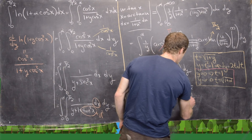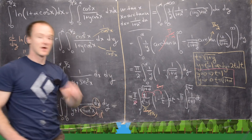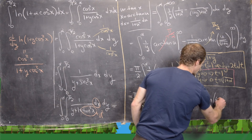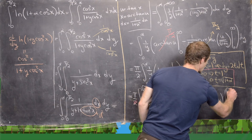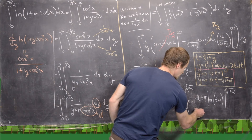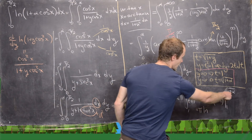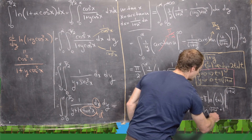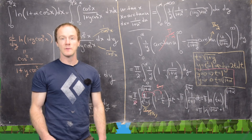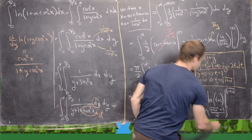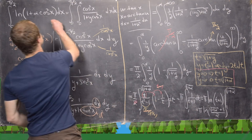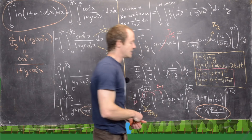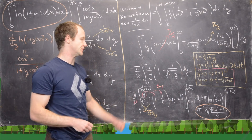That's a simple integral: π times ln(t+1), evaluated from 1 to √(1+α). This gives π·[ln(√(1+α)+1) − ln(2)], which by log rules combines into the final answer: π·ln[(√(1+α)+1)/2].